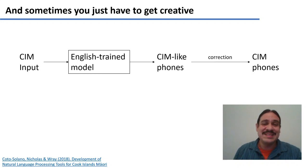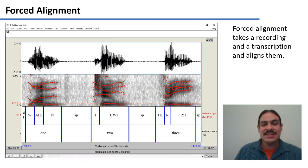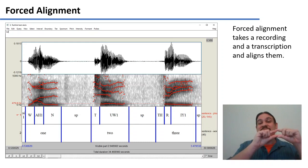If you get, you can get creative with these kinds of systems, and this is a project I was involved with. If you have an English trained model, for example, and you provide Cook Islands Maori input, you could get something that sounds like Cook Islands Maori. And through an additional mapping and correction, you can get that to be Cook Islands Maori phonemic transcription. We did this with a technique called forced alignment. In forced alignment, you get an audio input, and they, for example, a text file as input with the words in the recording.